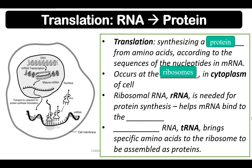Ribosomal RNA or rRNA is needed for protein synthesis and helps mRNA bind to the ribosome. Transfer RNA or tRNA brings specific amino acids to the ribosome to be assembled as proteins.